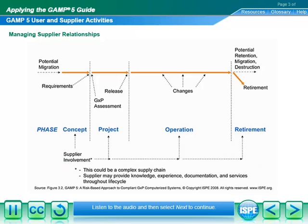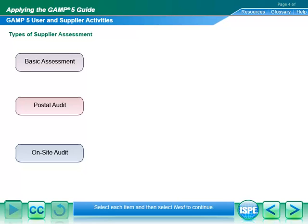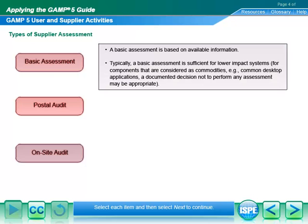The most common mechanism for this is the supplier assessment, which may include an audit depending on risk, complexity, and novelty. The use of a risk-based supplier assessment approach that focuses on key suppliers can help to reduce the cost of supplier assessment.